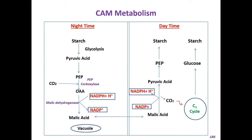CAM plants are xerophytic in nature. Their leaves are made up of spongy mesophyll cells containing chloroplasts and vacuoles, but no bundle sheath cells surrounding the vascular bundles as in C4 plants. CAM plants do not show Kranz anatomy like C4 plants. Unlike other plants, in CAM plants stomata are closed during the daytime — they are scotio-active, open during nights only. This is an adaptation for reducing the rate of transpiration and minimizing water loss.